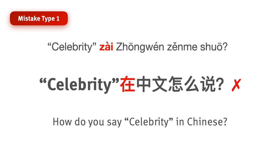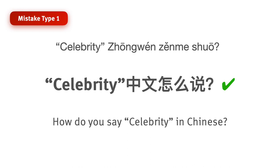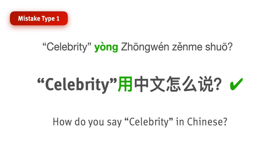Here's another sentence a student wrote: 'Celebrity 在中文怎么说?' The problem here is 在中文. Usually, when we say something in Chinese, we do not add 在. Instead, we simply say Celebrity 中文怎么说? — 'How do you say celebrity in Chinese?' Or you can say Celebrity 用中文怎么说?, literally meaning 'using Chinese' — 用中文.